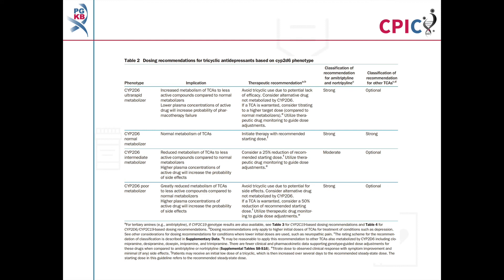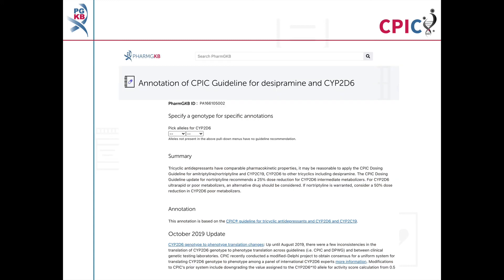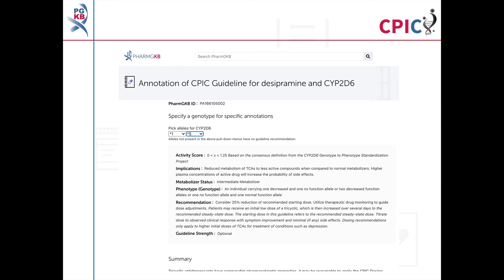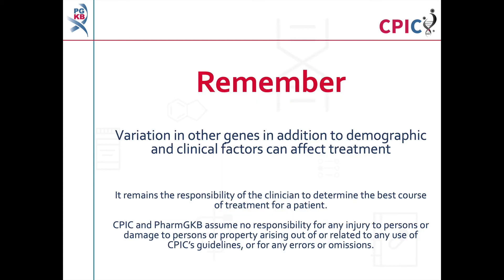The dosing recommendations for desipramine can be found in Table 2 of the guideline. Detailed footnotes pertaining to the recommendations can be found at the bottom of the table. This guideline has been annotated on the PharmGKB website, which includes a drop-down menu where an activity summary can be given for specific combinations of alleles. The activity summary includes implications for the patient's response to desipramine, the appropriate dosing recommendation for the specific genotype, and the strength of that recommendation. Remember that variation in other genes in addition to demographic and clinical factors, including concomitant medications, can affect treatment.